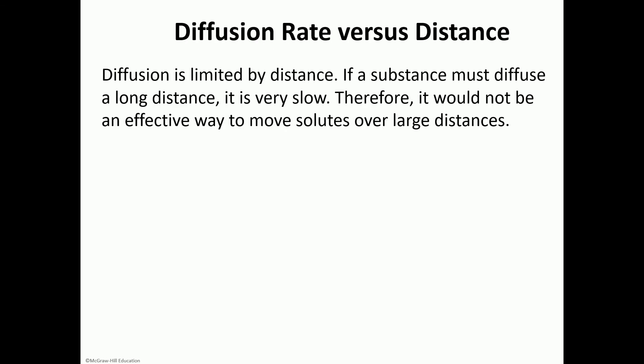Diffusion is limited by distance — it works well for short distances but would be very slow over long distances. The body uses different methods to transport molecules over longer distances. Simple diffusion works well for oxygen and carbon dioxide diffusing across the air sacs in the lungs, where distances are very short and concentration gradients are favorable.